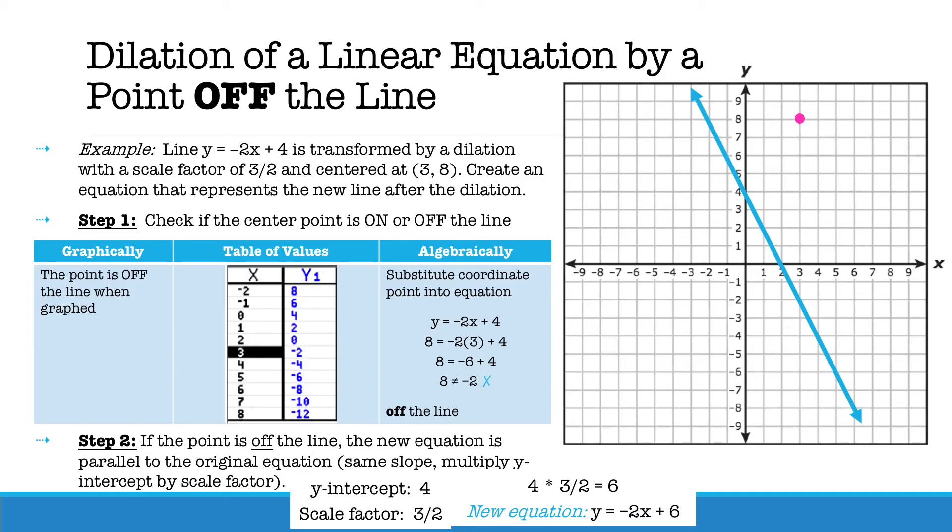So our new equation will then be y equals negative 2x plus 6. And when you graph it, you can see that these equations are parallel.